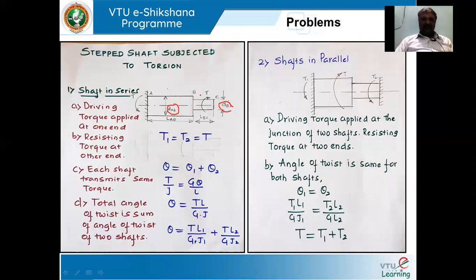A torque is applied at the free end and one end is fixed — end A is fixed and the other end is free. We say the alignment is a shaft in series when the driving torque is applied at one end, normally the free end. Due to this torque, a resisting torque is developed at the fixed end in the opposite direction. The driving torque is in the clockwise direction and the resisting torque is in the anti-clockwise direction. You can see the different lengths: length of AB and length of BC. Such an arrangement is called a shaft in series.